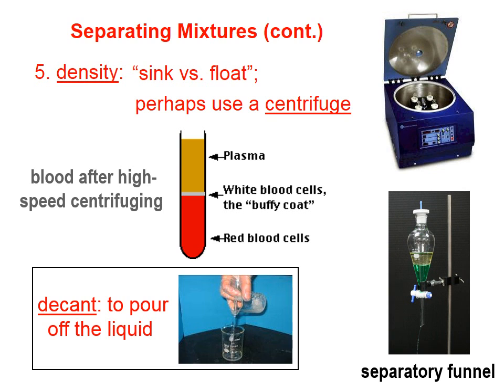A separatory funnel is based on density. You can see in this picture on the right that the greenish liquid is more dense and the yellowish liquid is not as dense. What we do is turn the stopcock and the green liquid starts to run out. When the green liquid has pretty much all run out and the yellow is just about to escape, we turn that stopcock and prevent the yellow from getting out, and thus we've separated the green from the yellow.